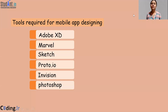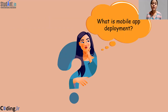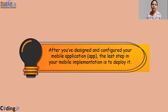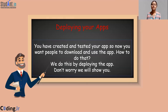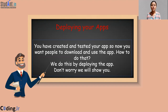Now, when you have got the fundamental idea of what mobile app design is, we should discuss mobile app deployment. What is mobile app deployment? When your apps are basically designed and configured, the next thing you need to do is deploy it. Once we have created and tested our apps to see if they're working fine, the next thing is that you want people to use your app. For that, they should download your app on their devices, and before that, you must deploy your app first.